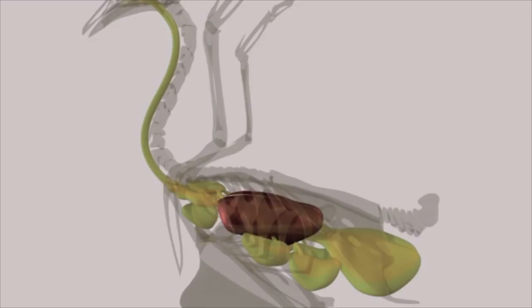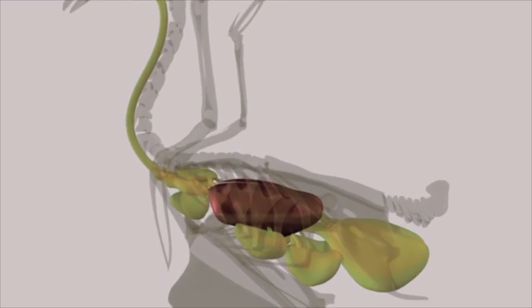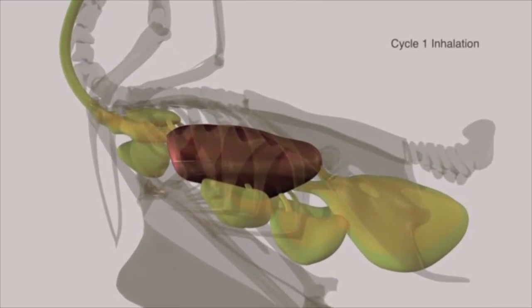The path of the breath through the system can be summarized in four steps. During the first inhalation, the breath travels down the trachea into the left and right bronchus, through the lung, and into the posterior thoracic and abdominal air sacs.